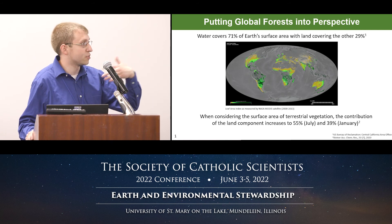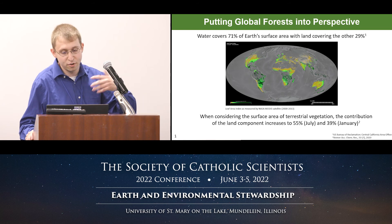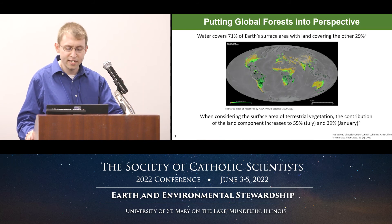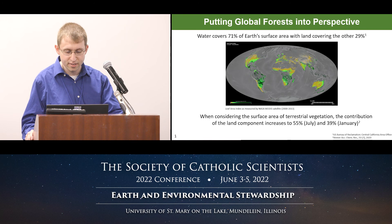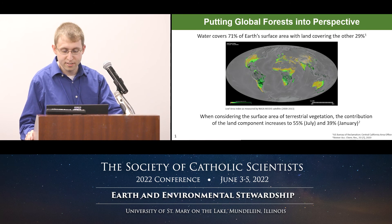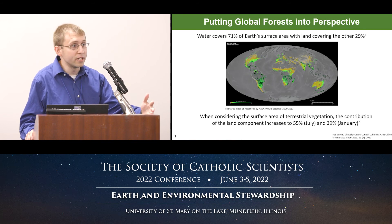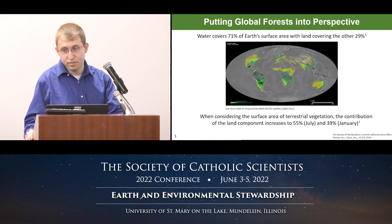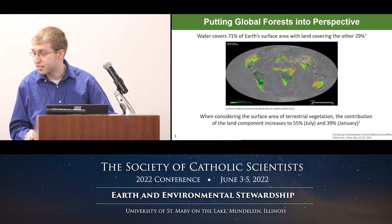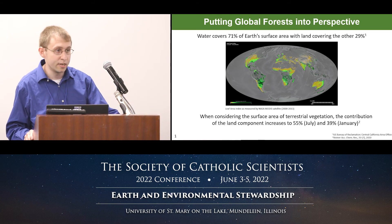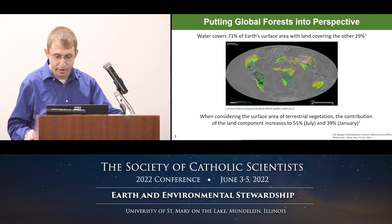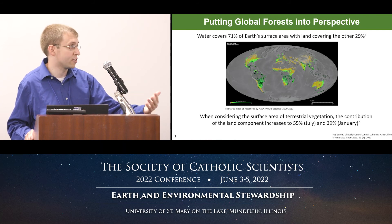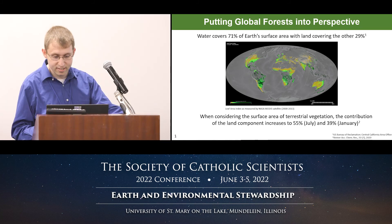The darker green represents more leaf area, and brown represents less. When you take into account the surface area from all these leaves, the contribution of that land component instead of only being around 30% actually increases to around 55% during the summertime and around 40% during January. So leaves have a particularly significant contribution to the Earth's system.